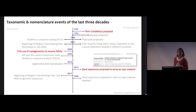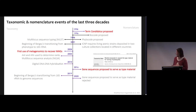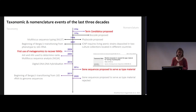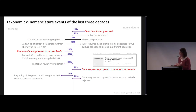What happened next in taxonomy was an explosion of different methods and new technologies that allowed us to profile microbial communities at deeper resolution. There was multi-locus sequence typing, then the first use of metagenomics in 2004, which allowed us to tap into genomic sequences from uncultured prokaryotes. Methods such as average nucleotide identity, amino acid identity, and digital DNA-DNA hybridization were proposed to delineate species from sequence data, replacing traditional DDH.